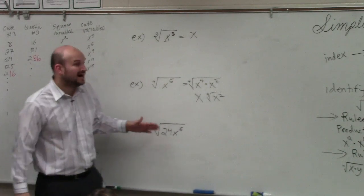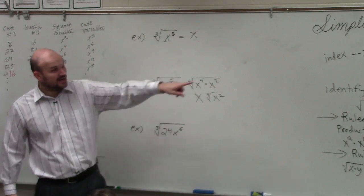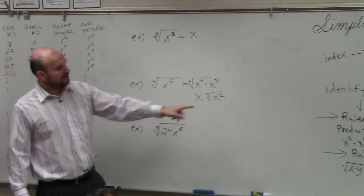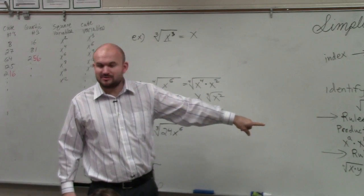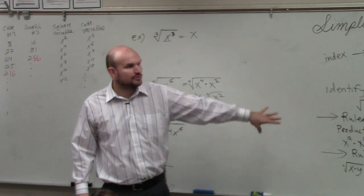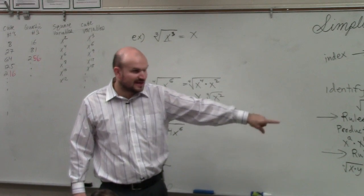So on this problem, now we have a combination of numbers and we have a combination of variables. Well, what's nice about the rules of radicals is we can do them all separately. I can do the root of one and the root of another. You can separate the x and the y's.